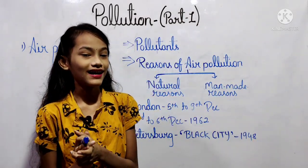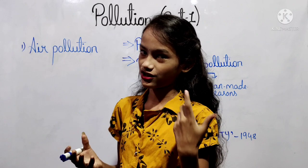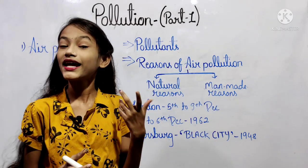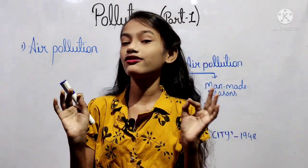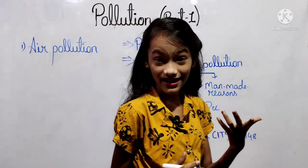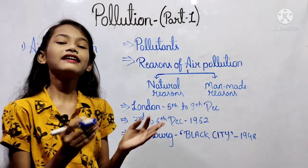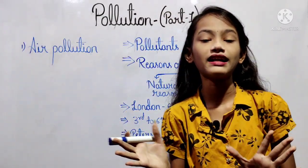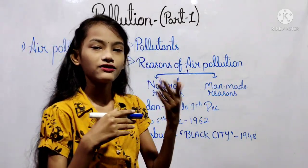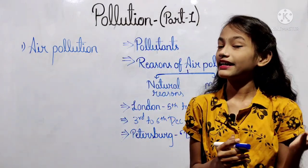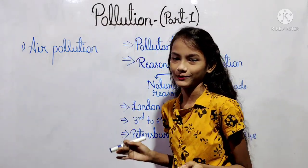Many problems have arisen on the earth due to human interference in nature. Industrialization, increasing population, mining, transportation, and indiscriminate use of pesticides and fertilizers are causing pollution on the earth, affecting human beings. The contamination of natural environment that is harmful to the ecosystem is called pollution.